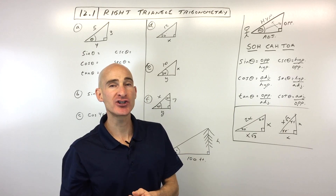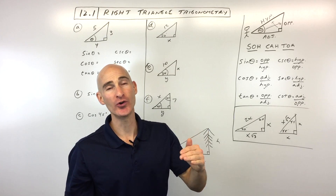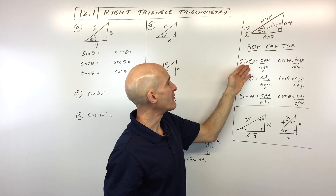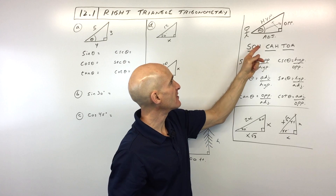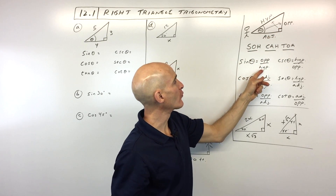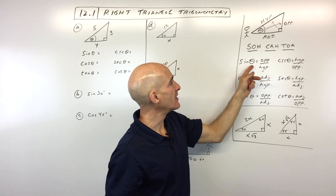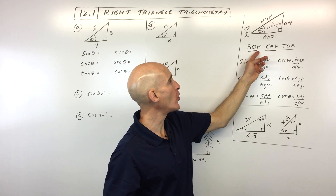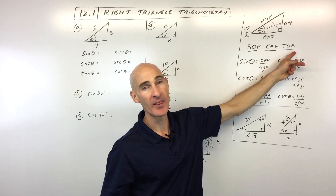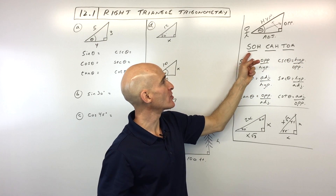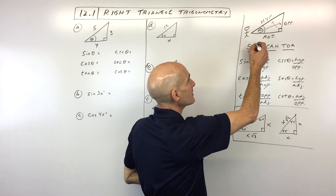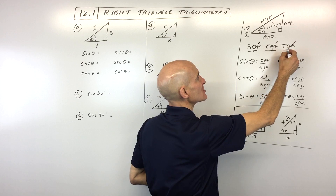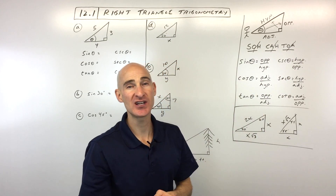We're working with these trigonometric functions, and basically what they are are the ratios of two sides in a right triangle. When you want to find the sine of an angle, you take the opposite side over the hypotenuse. There's an acronym that students learn — SOH-CAH-TOA. Sine is the opposite side over the hypotenuse, cosine is the adjacent side over the hypotenuse, and tangent is the opposite side over the adjacent side.